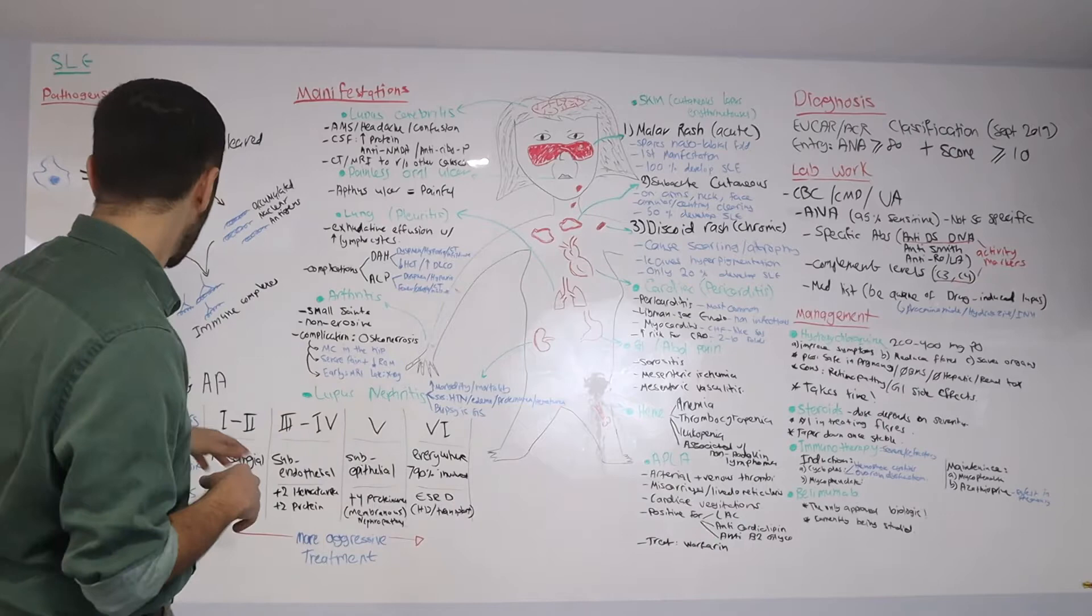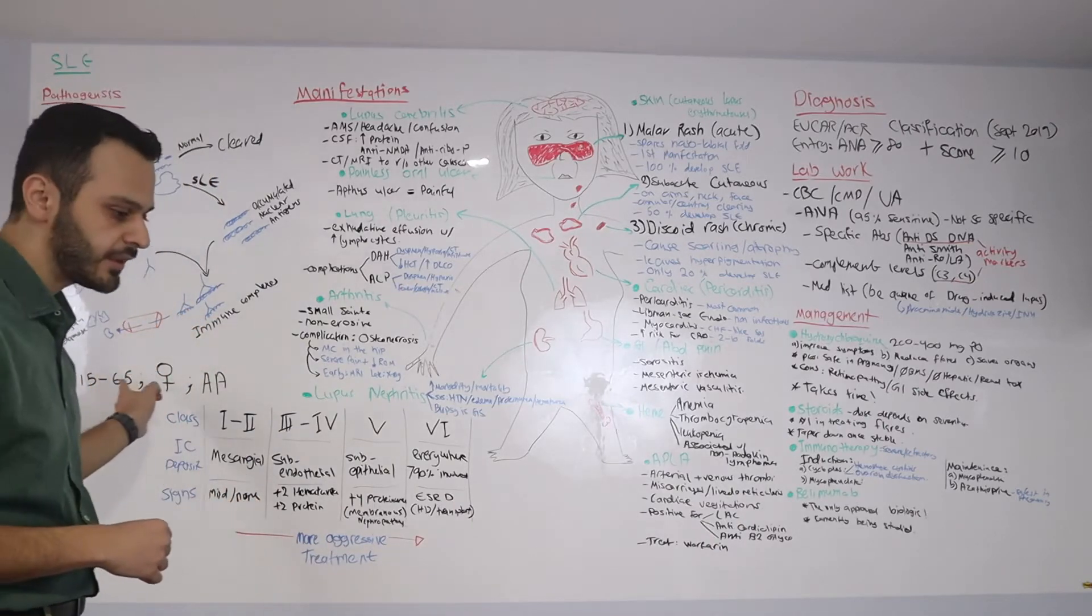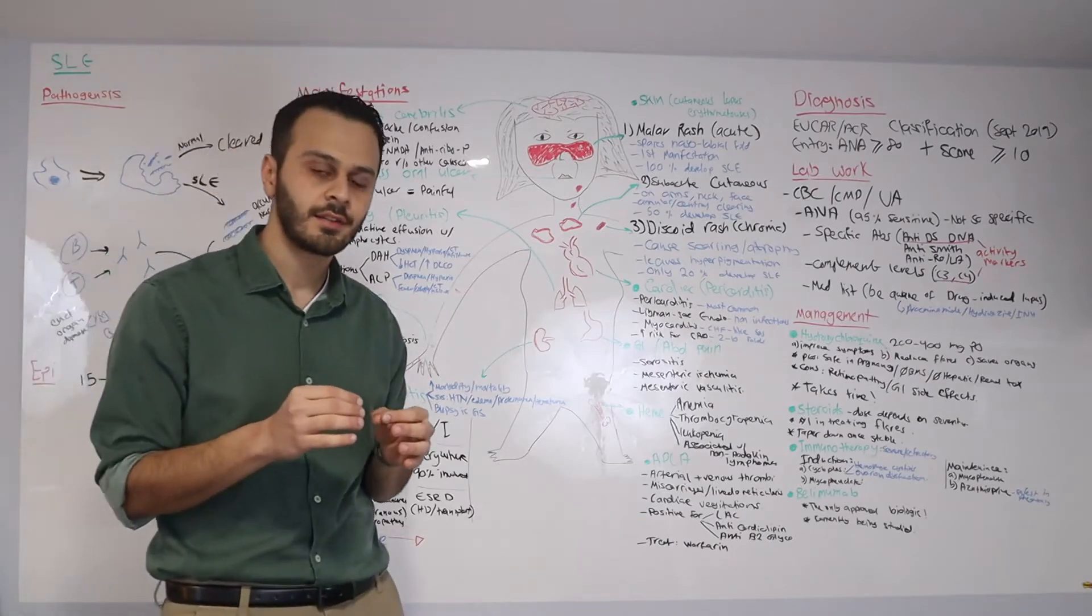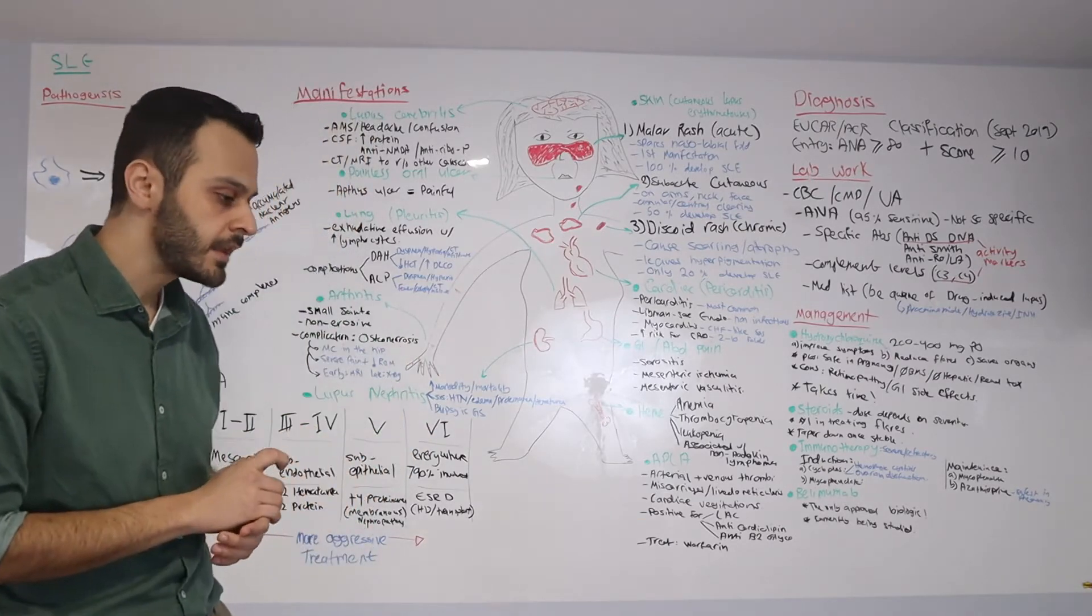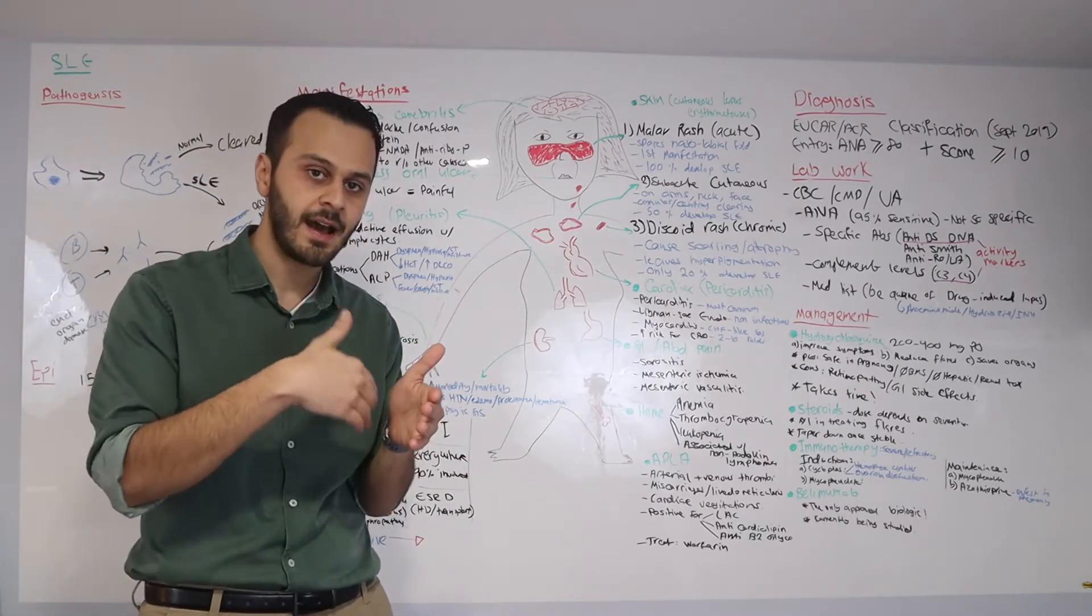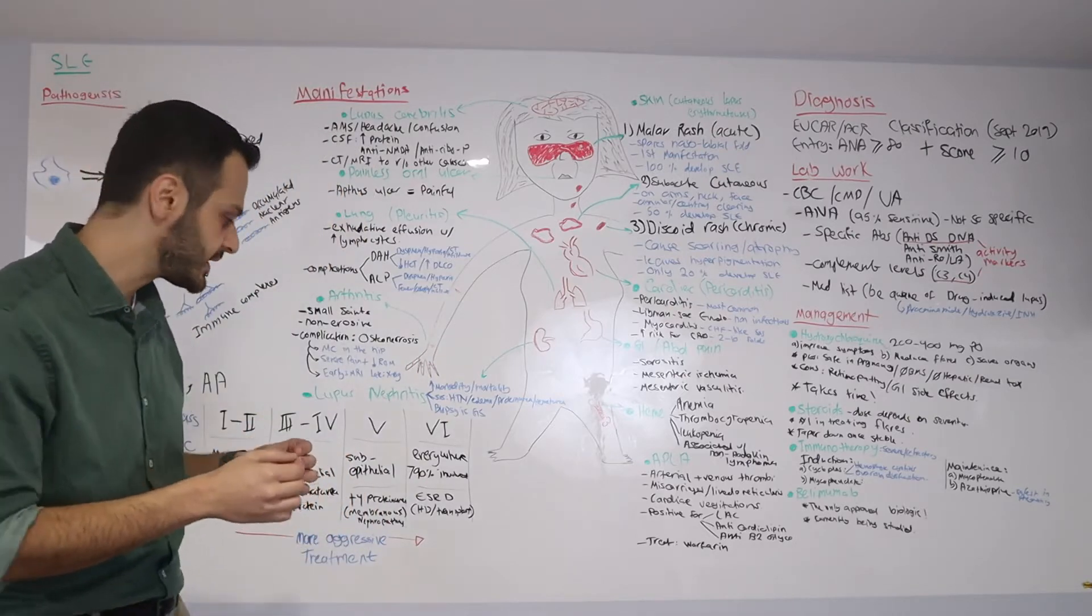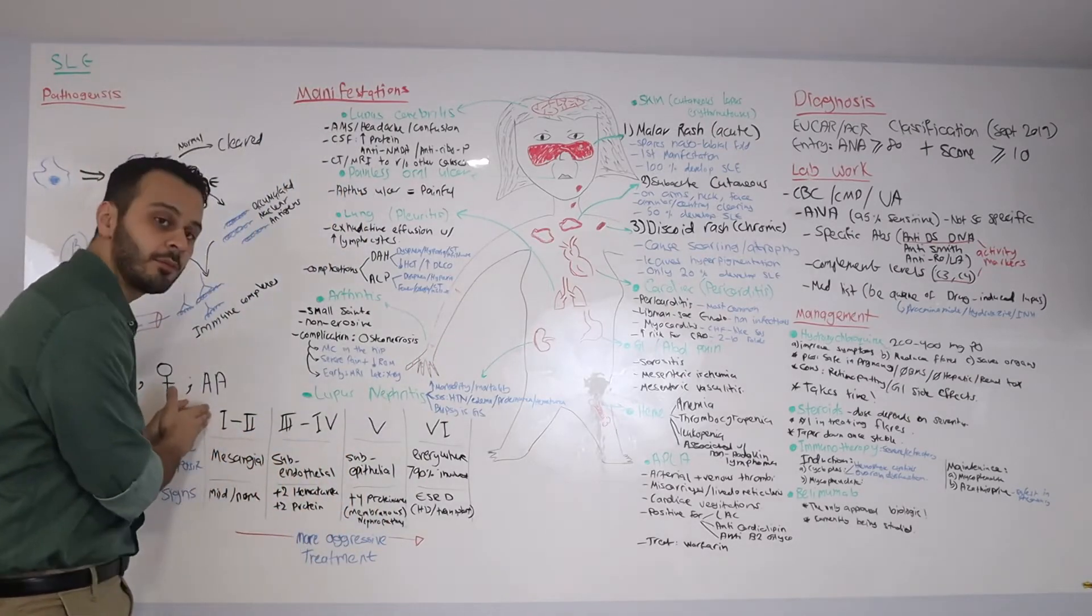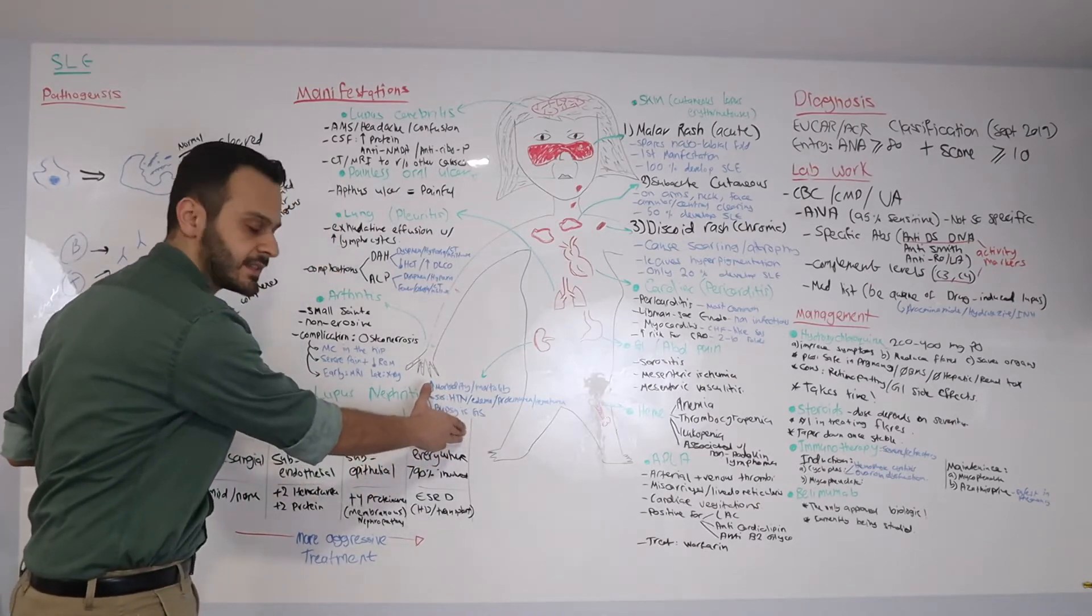When these immune complexes that I mentioned reach through the bloodstream to the kidney and start to deposit in the glomerulus, based on where they deposit and the extent of deposition, we classify lupus nephritis from class 1 being the most mild and class 6 being the most severe, which is end stage level.